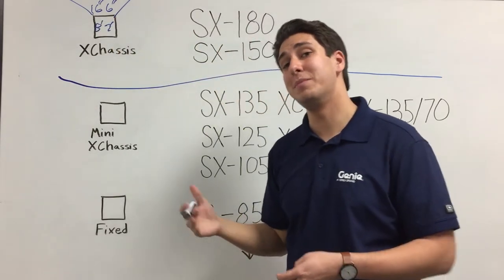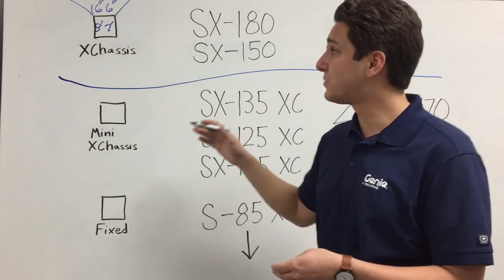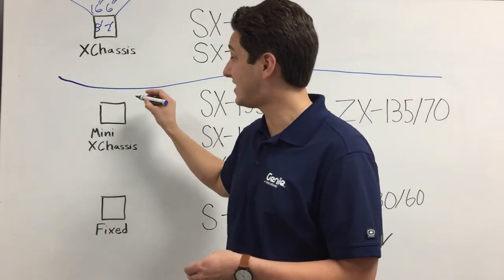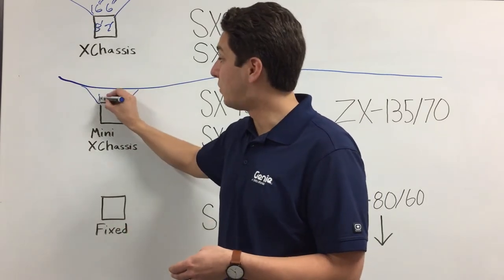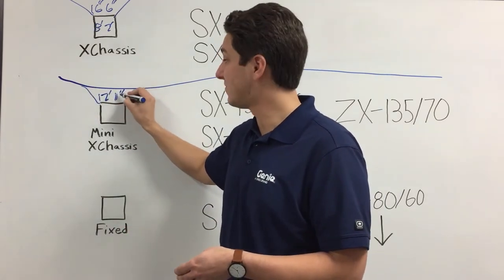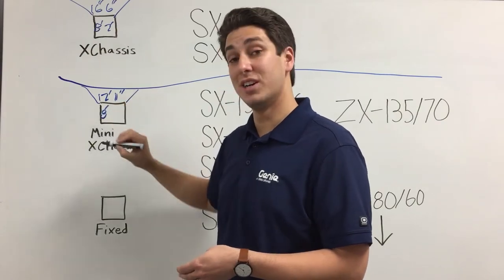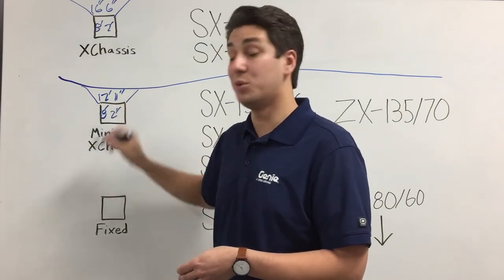The next category is where the Mini X chassis comes in. This is built on the same design as the full-size X chassis, but uses a more narrow operating width of only 12 feet, 11 inches, and is still collapsible to 8 feet, 2 inches for transport.